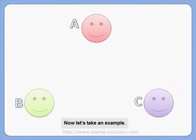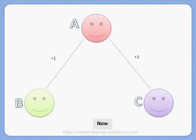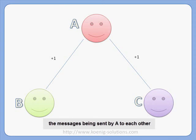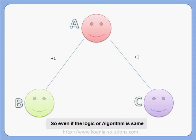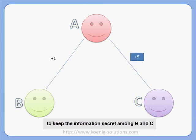Let us take an example. Let us say there are three users A, B, and C. A wants to communicate with B and C, and let us say it uses plus one for both communications. In this case, B and C can understand the messages being sent by A to each other. So even if the algorithm is the same, we should use a different key. For example, A can use plus one for B and plus five for C to keep the information secret between B and C.